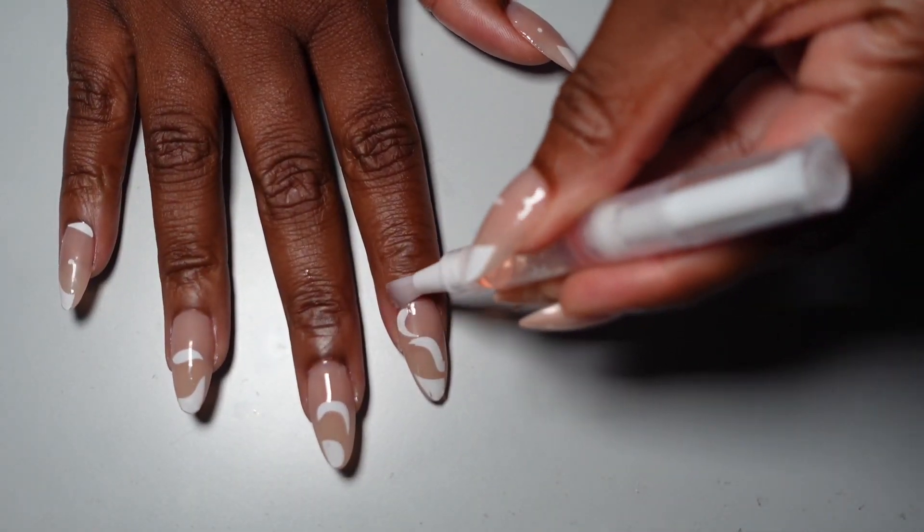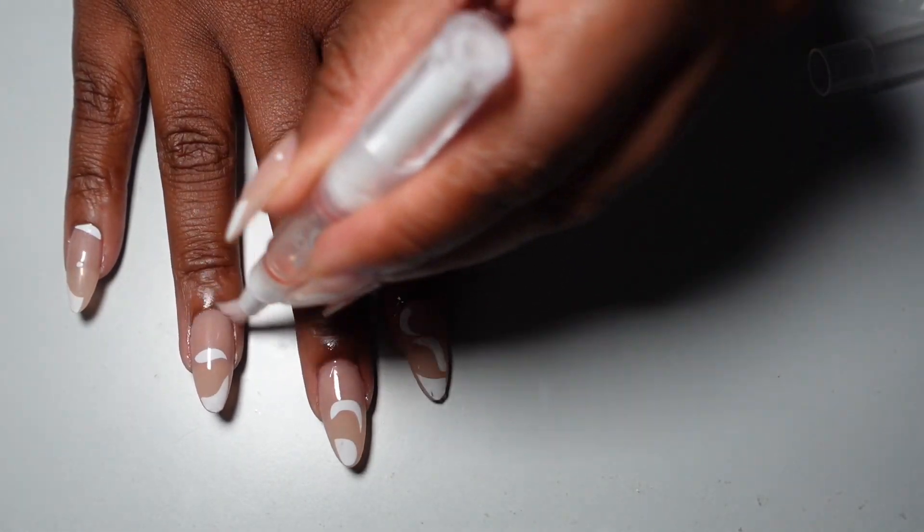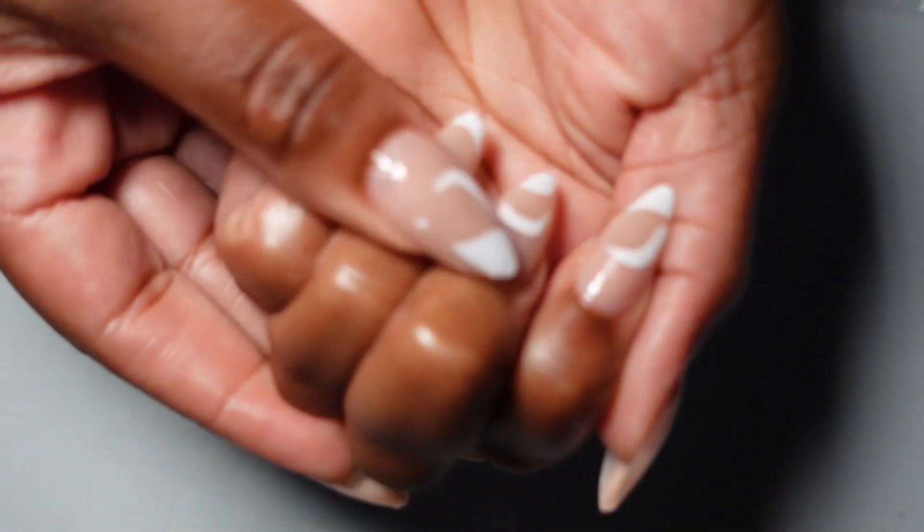And then I just rub it in with my fingers. Once I'm done adding the oil, and y'all, that's it. That's basically how you do the press-ons to make them look like you've been to the nail salon without paying nail salon prices.